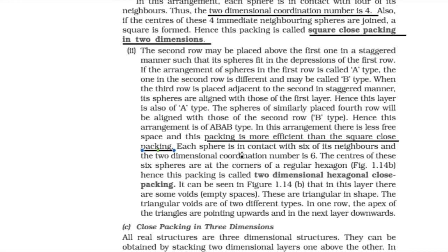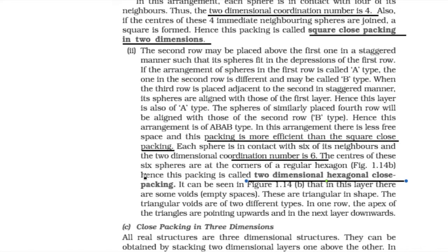Each sphere is in contact with six of its neighbors and the two-dimensional coordination number is 6. The centers of these six spheres are at the corners of a regular hexagon. Hence, this packing is called two-dimensional hexagonal close packing. It can be seen in the diagram that in this layer there are some voids — void means empty spaces.